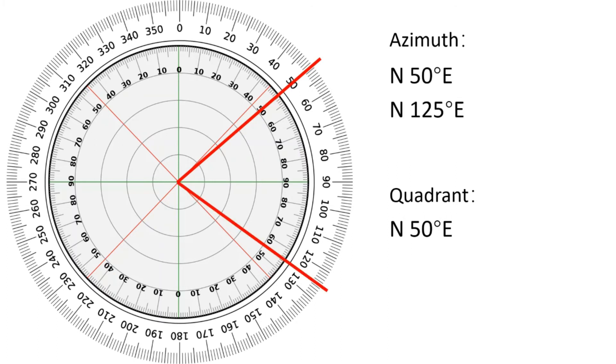What is the quadrant reading when azimuth reading is north 125 degrees east? It is south 55 degrees east, since reading from south gives smaller reading.